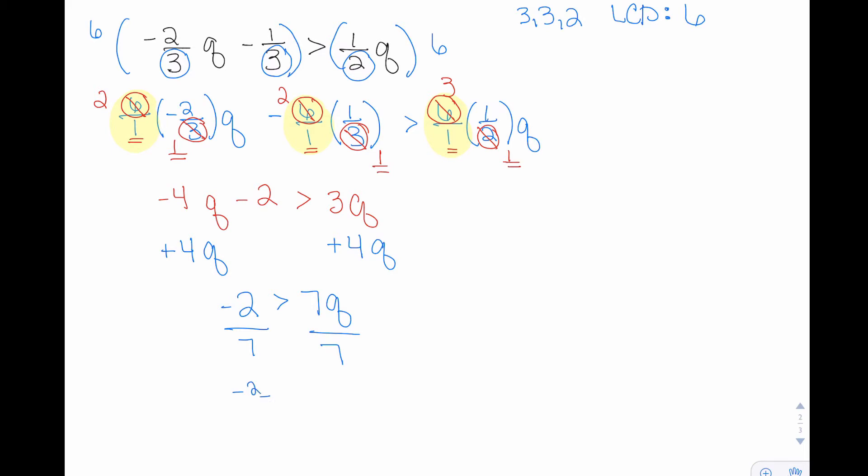So negative two over seven is greater than Q. If I want to write the Q first, I can rewrite this inequality as Q is less than negative two over seven. This is one way to write the solution for the inequality.